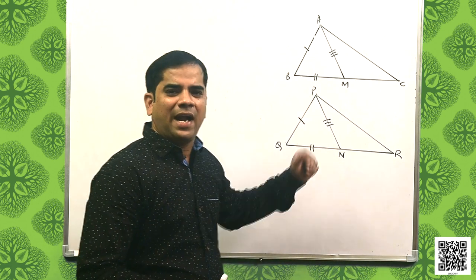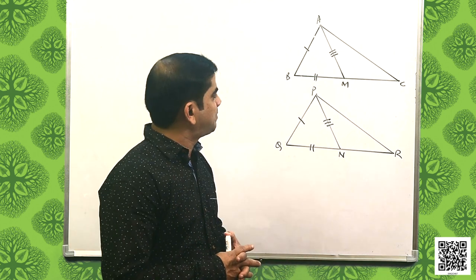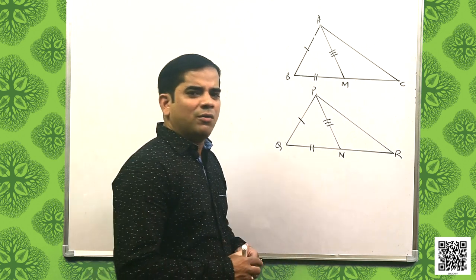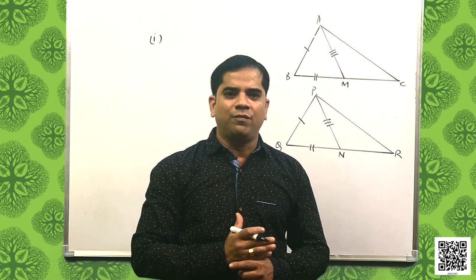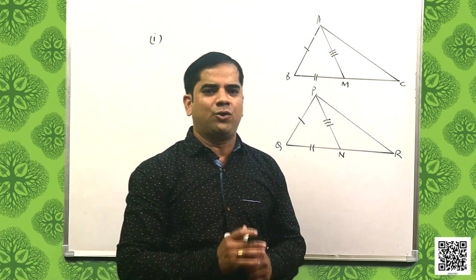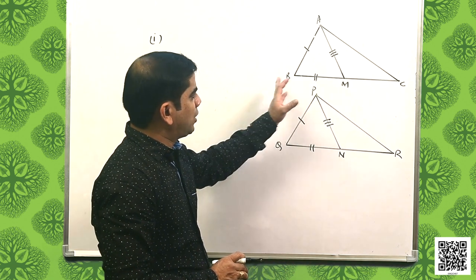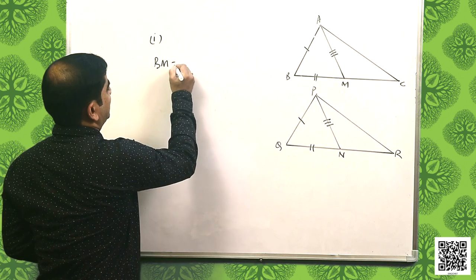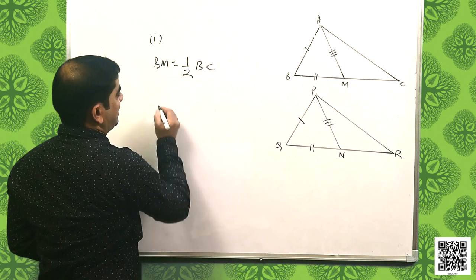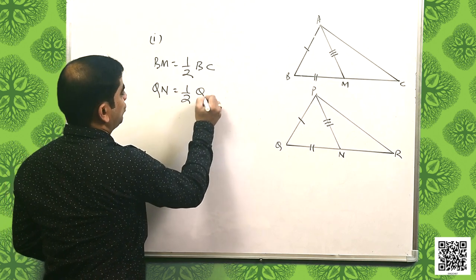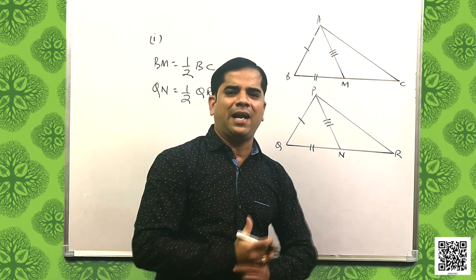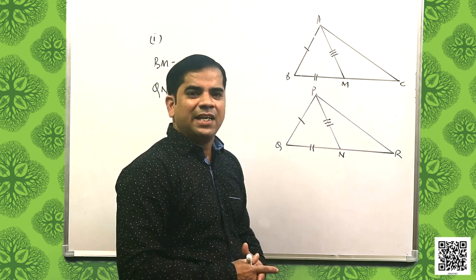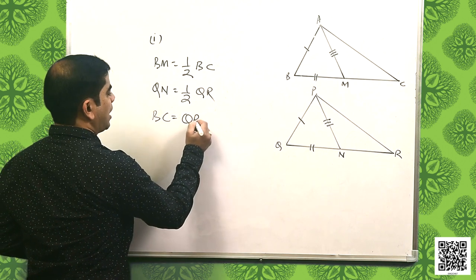M and N are midpoints of BC and QR respectively, because AM and PN are medians. Now, since M is the midpoint of BC, BM is equal to half BC and QN is equal to half QR. Also, BC is equal to QR — it is given.